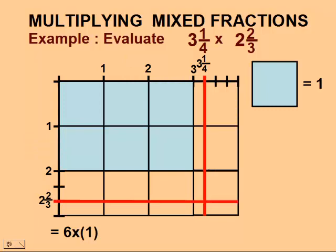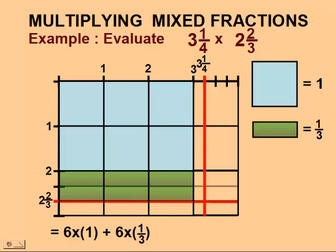We'll start by multiplying 2 times 3, the two whole numbers, and we will get 6 unit squares represented in blue. Next, we'll figure out our thirds. These are represented by the green rectangles. We have 6 one-thirds.